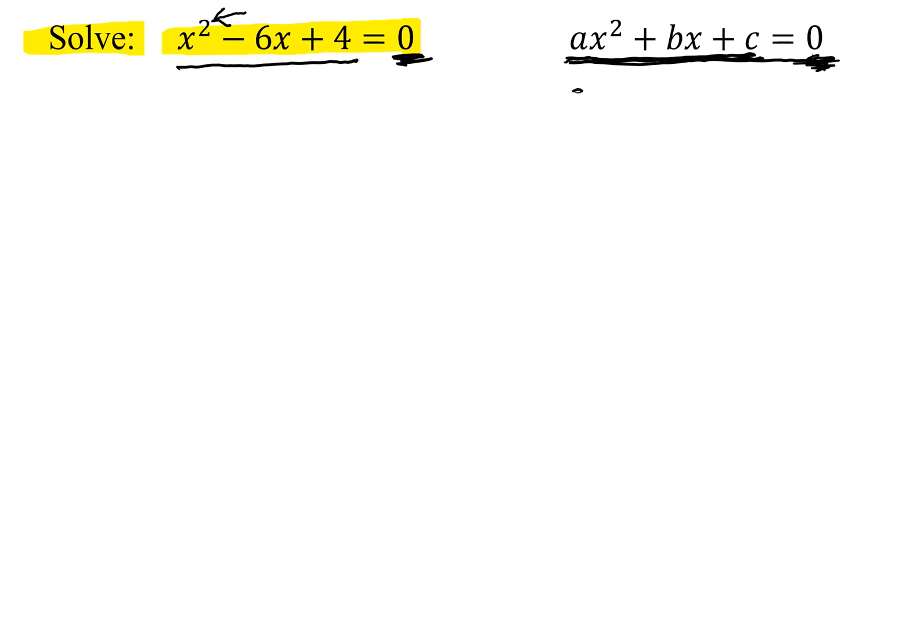Let's figure out what a is. a is the coefficient of the x squared, which is a 1. b is the coefficient of the x, so it's negative 6. And c is the constant term, so it is 4.